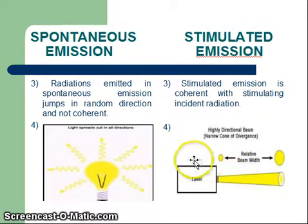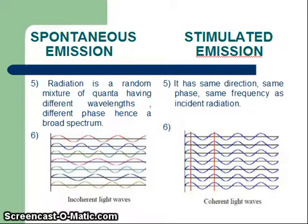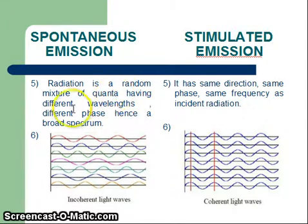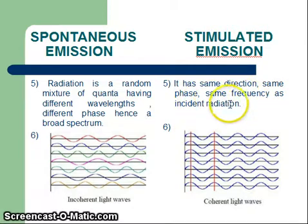The fifth difference is that in the case of spontaneous emission, radiation is a random mixture of quanta having different wavelengths and different phases, hence producing a broad spectrum. Whereas in the case of stimulated emission, the radiation has the same direction, same frequency, and same phase as that of the incident radiation.